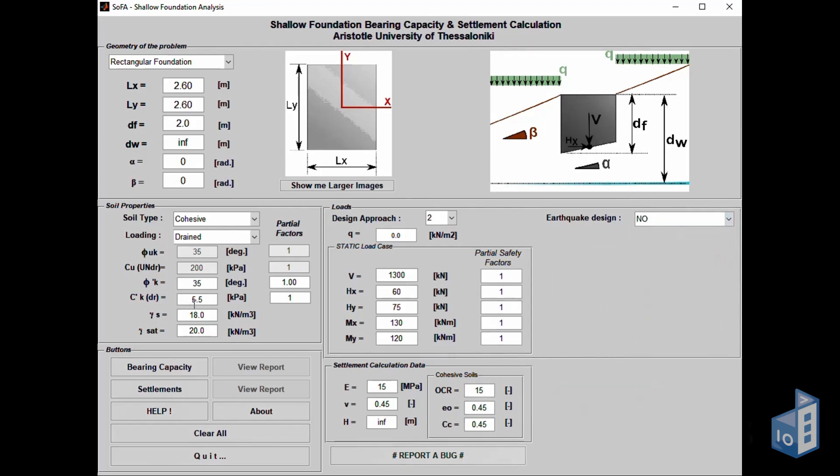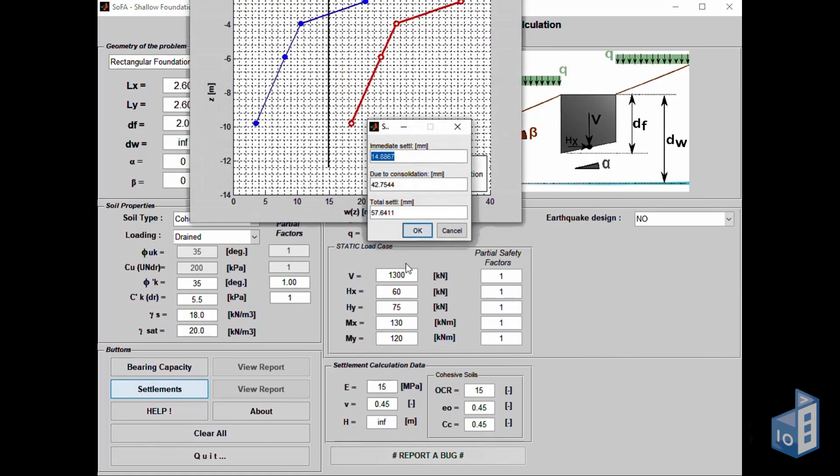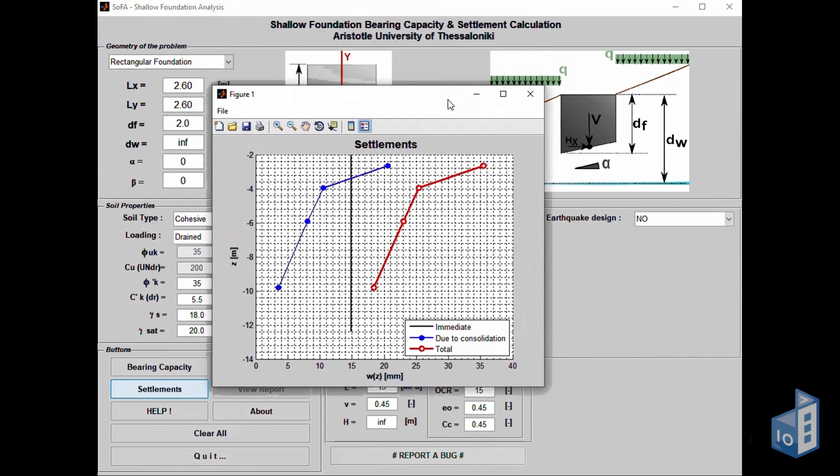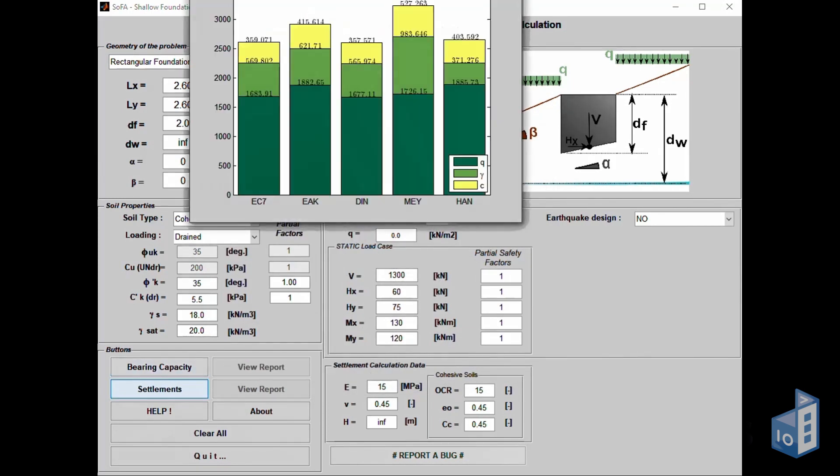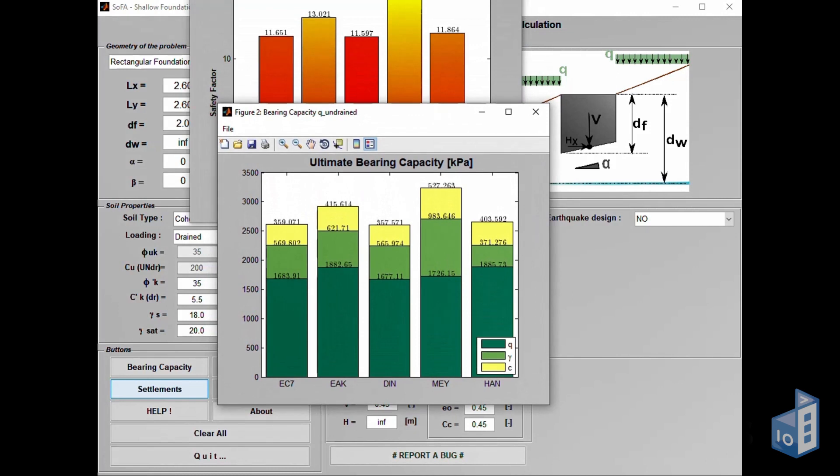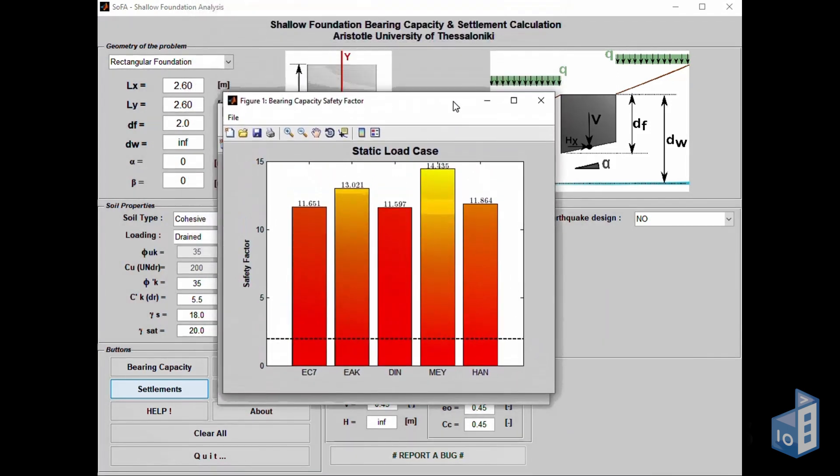As for the calculations, these can be found under the buttons section and include bearing capacity and settlement calculations. The corresponding graphs are produced by simply clicking the buttons. As can be seen, bearing capacities are determined for a variety of standards and include safety factors.